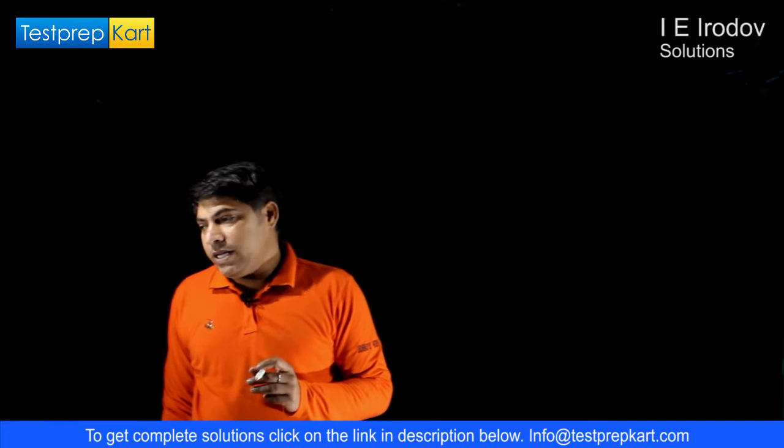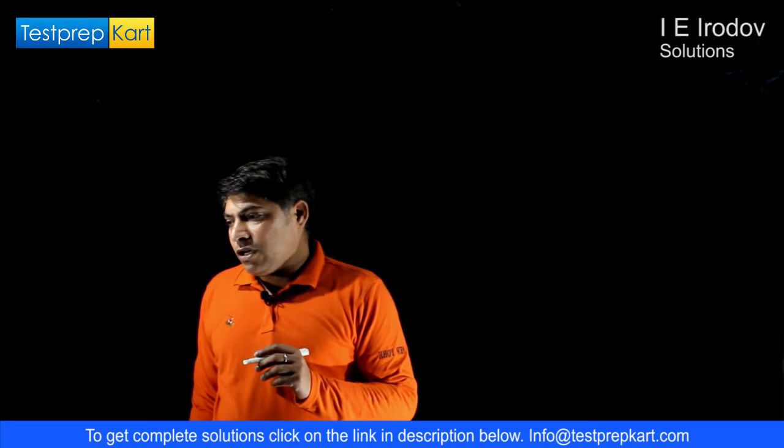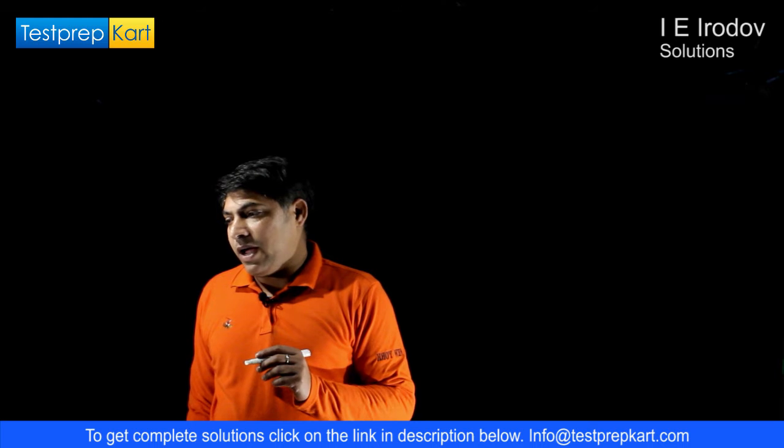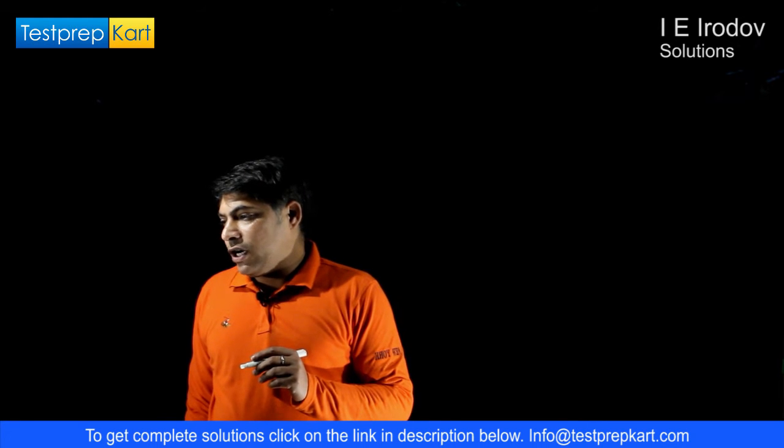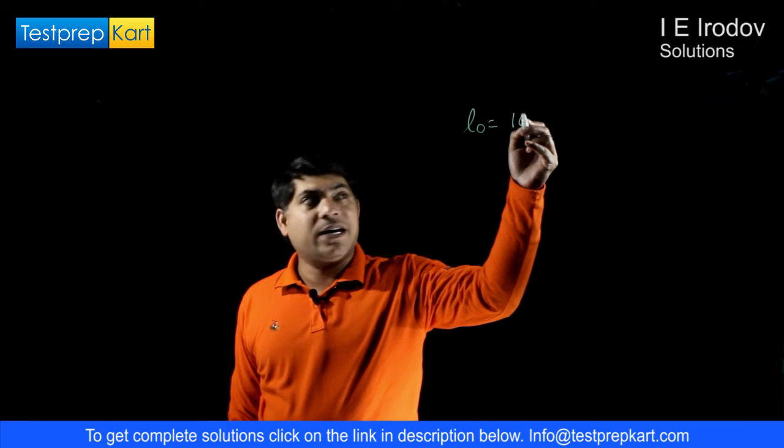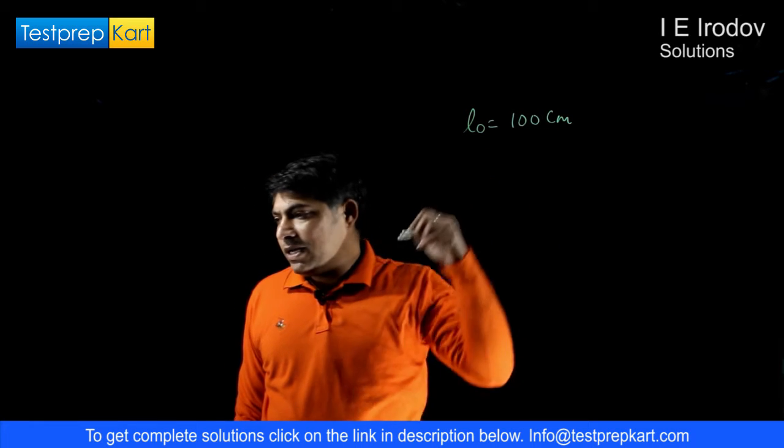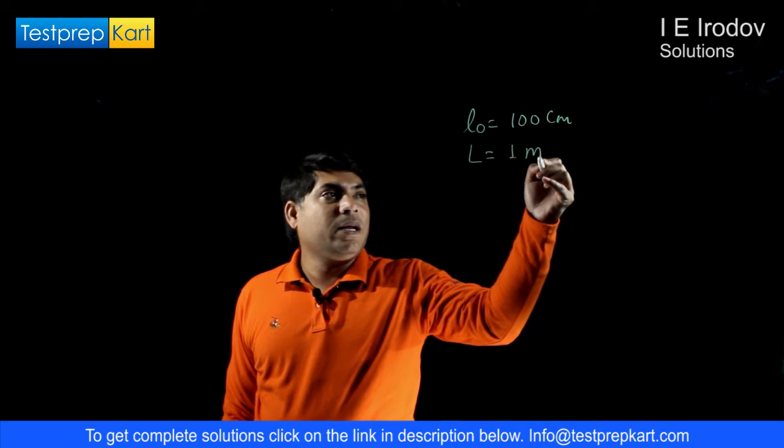Question number 3.315. How many meters of thin wire is required to manufacture a true solenoid of length L₀ equal to 100 cm and inductance of 1 mH?